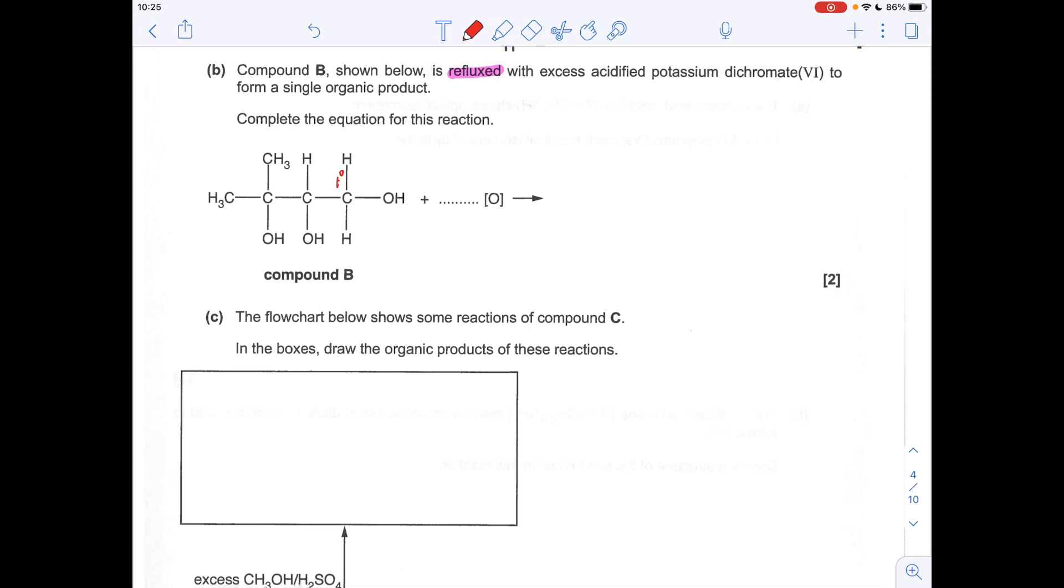This alcohol group here is a secondary alcohol. So that'll only go to a ketone. And this alcohol group on the end here is a tertiary alcohol that doesn't get oxidized at all.